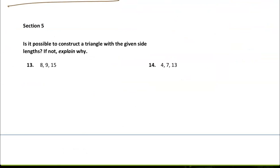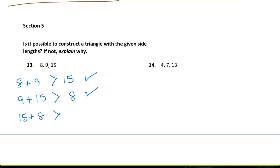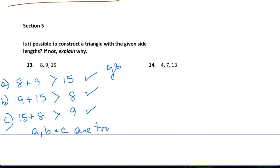Section 5: is it possible to construct a triangle with the given side lengths? You know that 8 plus 9 has to be greater than 15 — and 17 is greater than 15, true. Then 9 plus 15 has to be greater than 8 — 24 is, true. And 15 plus 8 has to be greater than 9 — 23 is, true. So you can say yes, because all three conditions A, B, and C are true.